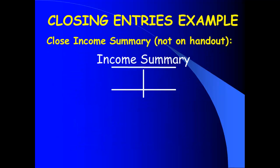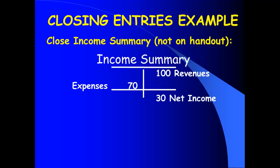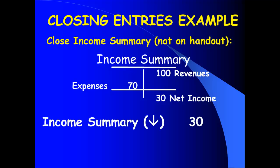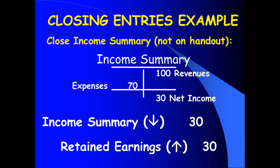Let's look at an example. What if my first closing entry was a credit to Income Summary for $100 when I closed out revenue, and the second closing entry was a debit to Income Summary for $70 when I closed out expenses? My balance in Income Summary right now is $30 and it is a credit. What does that number 30 represent? Net income — because I had revenues of 100, expenses of 70, and revenues minus expenses equals net income. So I have a $30 credit balance in Income Summary. To get it down to zero, I debit Income Summary for 30 and the credit goes to retained earnings. Earning a net income makes my retained earnings go up.